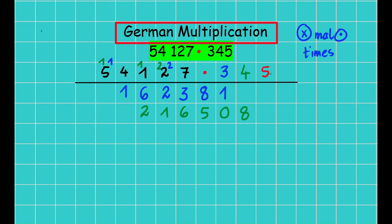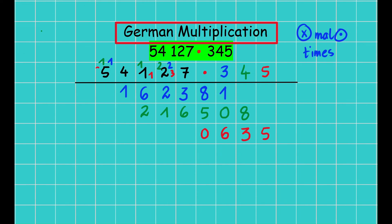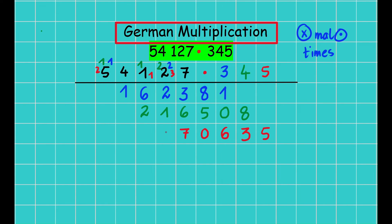Now starting with the five, I take the red color and write the numbers shifted further left. Five times seven is 35 — I write five here and carry three. Five times two is ten, plus three is thirteen — write three and carry one. Five times four is twenty, plus one is twenty-one — write one and carry two. Five times four... five times five is twenty-five, plus two is twenty-seven — so write seven and carry two.